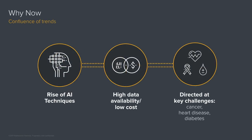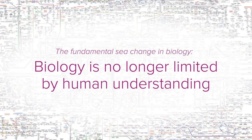A final question: why now? What's special about now? From my point of view, three key trends have come together. The first is just the rise of AI — it's so ubiquitous and easy to start. But secondly, AI alone is not going to do it; without data, these algorithms really could not do anything, so the availability of data is a second key part. Finally, there's the ability to go after really meaningful problems — cancer, heart disease, diabetes — some of the biggest killers we deal with. We've seen a sea change: biology is no longer limited by human understanding.